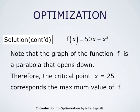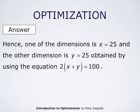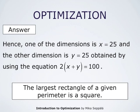Regardless of how we justify it, the value X = 25 corresponds to the largest possible rectangle with perimeter 100 meters. The dimensions are X = 25 and Y = 25, where Y is solved from the equation 2X + 2Y = 100. We conclude that the largest rectangle of a given perimeter is a square — a rather natural result.